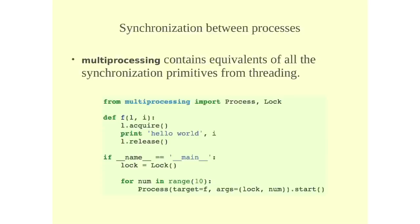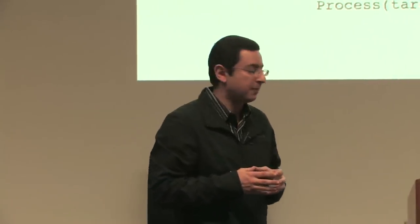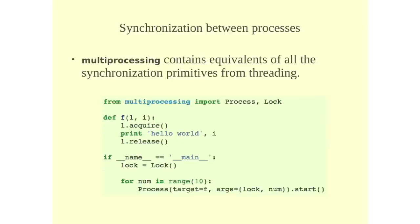So in this example here, we are writing hello world to the standard output. And if you have multiple processes running at the same time doing that, you might get confused outputs written. So the text will be mixed up. To stop that, you create an instance of lock and you pass it to your function that is running as a separate process.